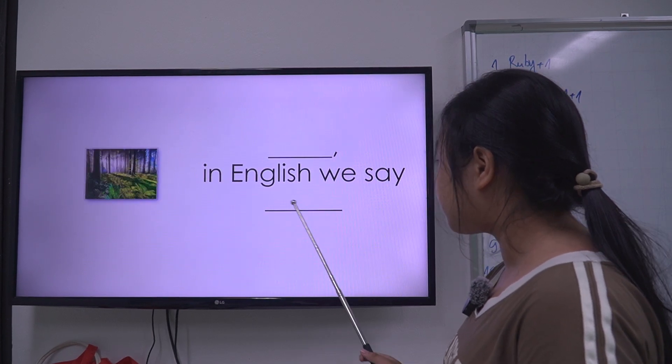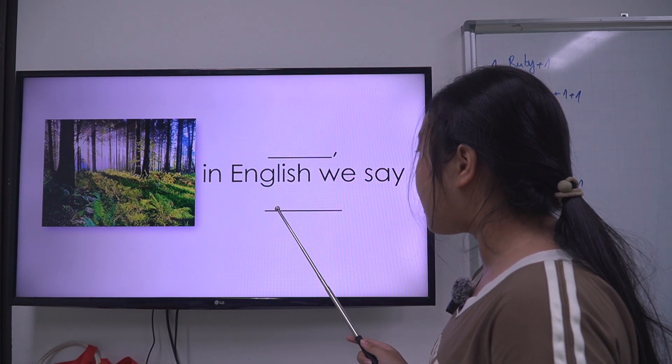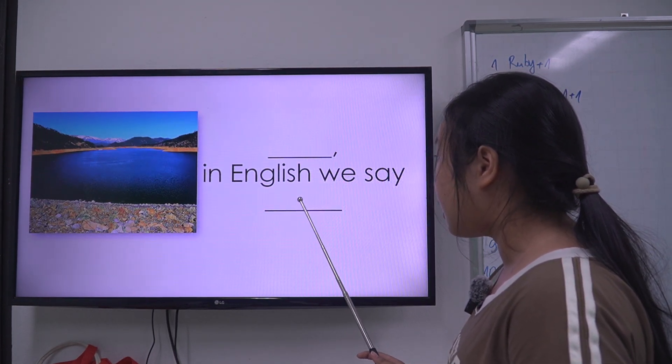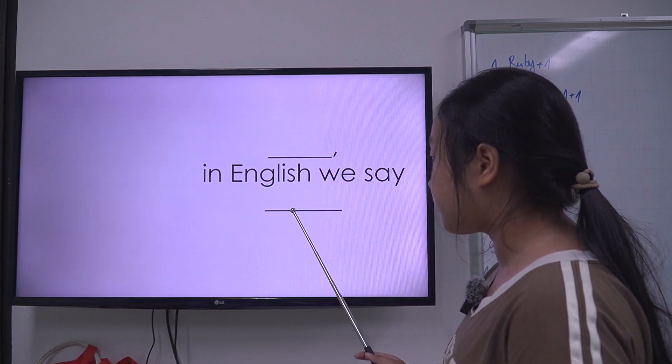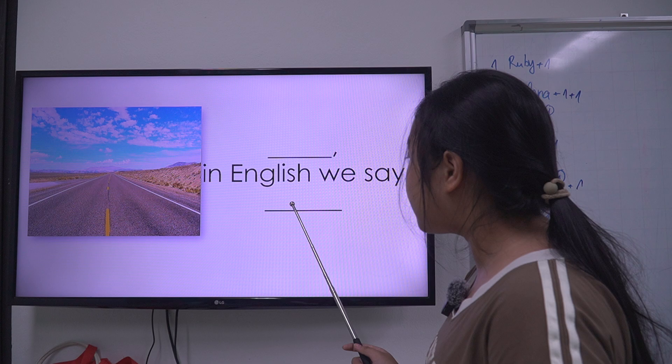Okay, next, how do we say rừng in English? We say forest. How do we say hồ in English? We say lake. And how do we say con đường in English? We say road.